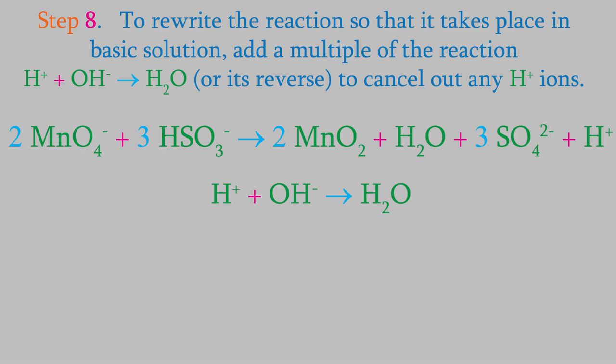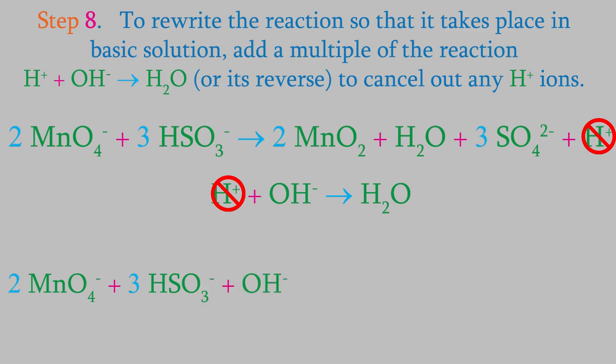In this case, there's one H plus ion, so we'll add one copy of this reaction, which makes the hydrogen ion cancel out. When we add the reactions, it gives us a final result of two permanganate ions, three bisulfite ions, and one hydroxide ion on the left, and two manganese dioxide molecules, three sulfates, and two waters on the right. So that's our balanced reaction.